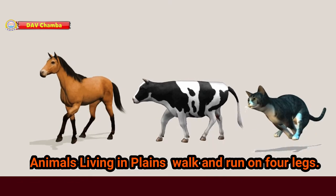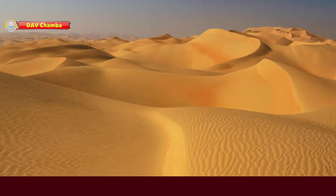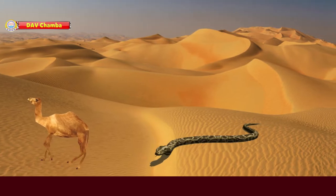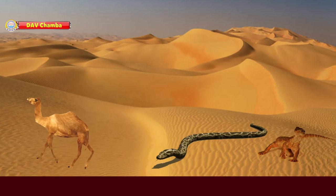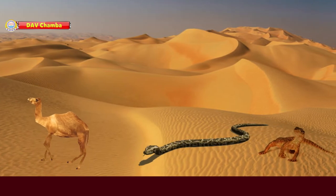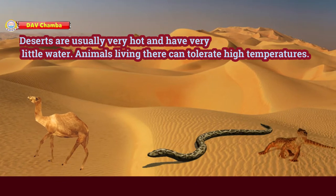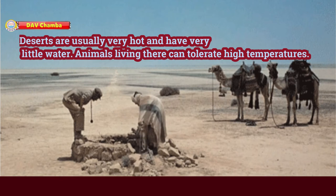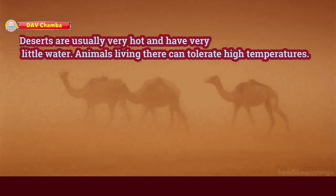Now let us see the animals living in deserts. Animals like camel, snake, lizard, and so many others are found in deserts. Deserts are usually very hot and have very little water.